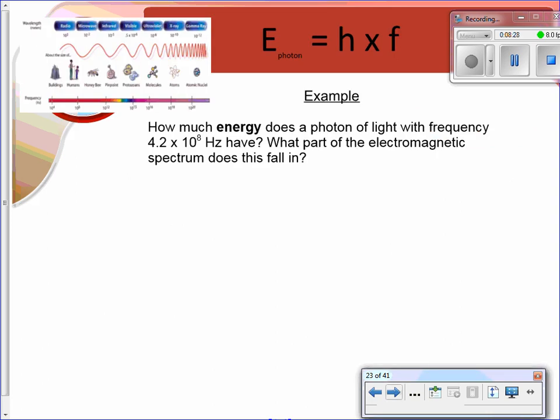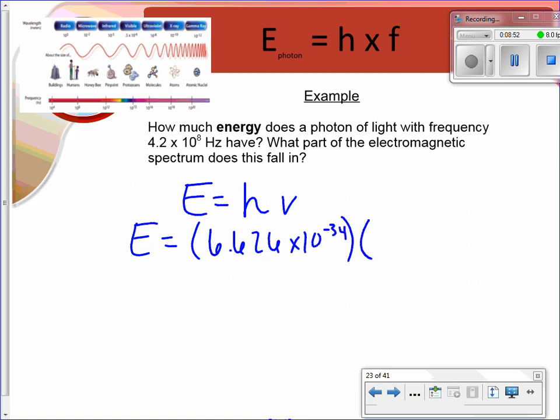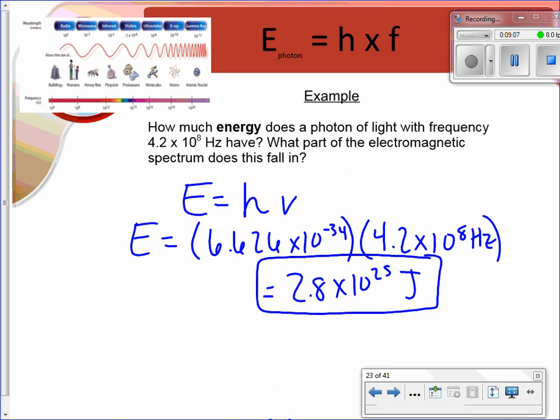So if we're going to solve a problem with that and use that relationship, how much energy does a photon of light with a frequency of 4.2 times 10 to the eighth hertz have? What part of the electromagnetic spectrum does this fall in? We've got energy equals Planck's constant times frequency. We don't know the energy. Planck's constant is 6.626 times 10 to the negative 34, times our frequency, which is 4.2 times 10 to the eighth hertz. And when you solve it out, you get 2.8 times 10 to the 25th. And energy is notated in joules, which should be familiar to you. We have used energy as joules before.